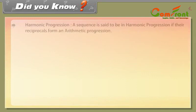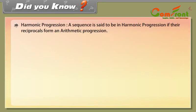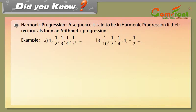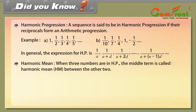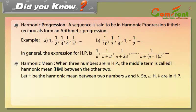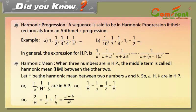Did you know? Harmonic Progression (HP): A sequence is said to be in HP if the reciprocals of its terms form an arithmetic progression. Example: 1, 1/2, 1/3, 1/4, 1/5, ... and 1/10, 1/7, 1/4, −1/2, ... Harmonic Mean: When three numbers are in HP, the middle term is called the harmonic mean. If H is the harmonic mean between A and B, then 1/A, 1/H, 1/B are in AP, giving H = 2AB/(A+B).